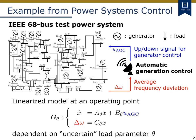As a motivating example for today's topic, let's think about power systems control. This figure shows a power network model called IEE68 bus test path system, in which the generators are represented by the circles and the loads are represented by the arrows. For the frequency regulation of this power system, a centralized control scheme called automatic generation control is often implemented. In this control, the average of frequency deviations is measured as an output signal from generators, while an up and down signal for generator control is broadcasted to controllable generators.